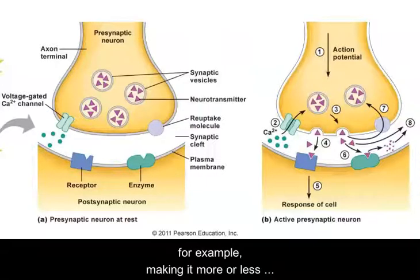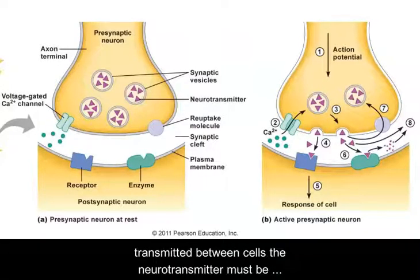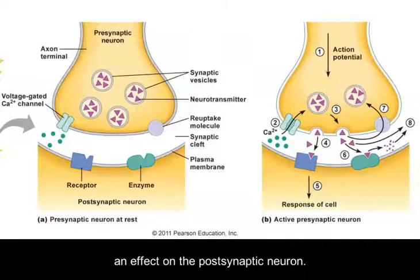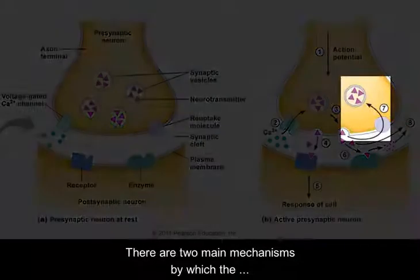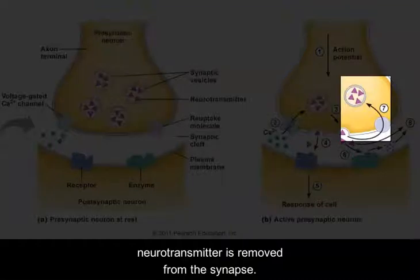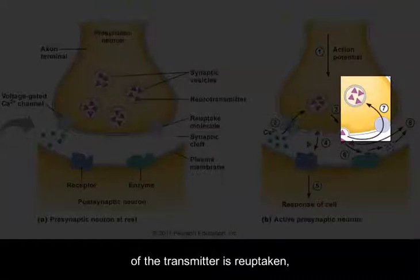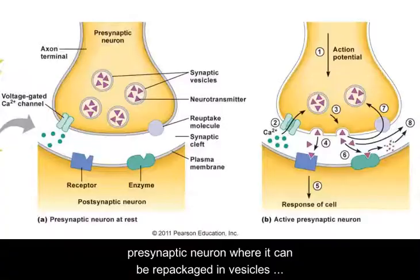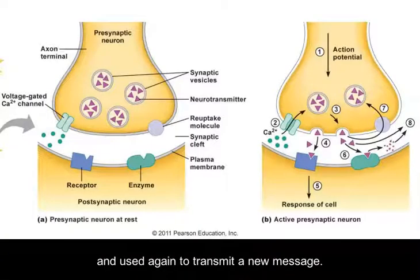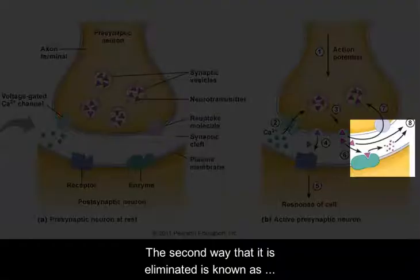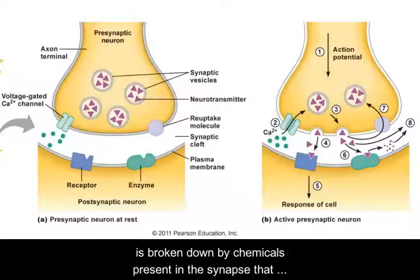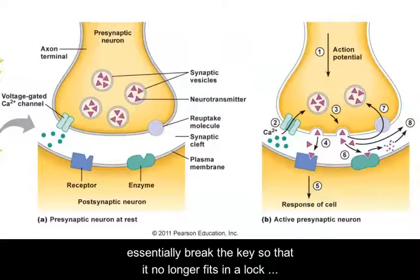Once the message has been transmitted between cells, the neurotransmitter must be eliminated, or it will continue to have an effect on the postsynaptic neuron. There are two main mechanisms by which the neurotransmitter is removed from the synapse. First, about 70% of the transmitter is reuptaken, which means recycled, brought back into the presynaptic neuron, where it can be repackaged in vesicles and used again to transmit a new message. The second way that it is eliminated is known as metabolization, whereby the neurotransmitter is broken down by chemicals present in the synapse that essentially break the key so that it no longer fits in the lock and can no longer transmit the message.